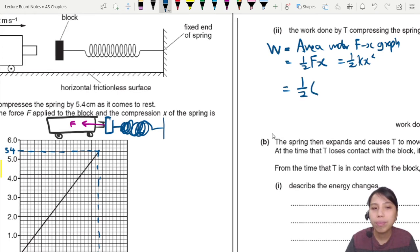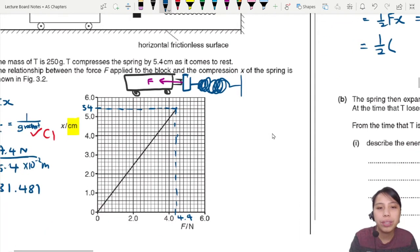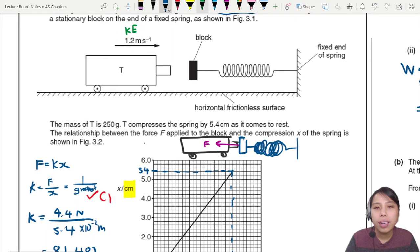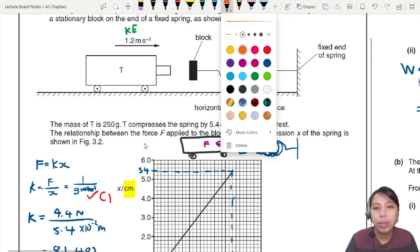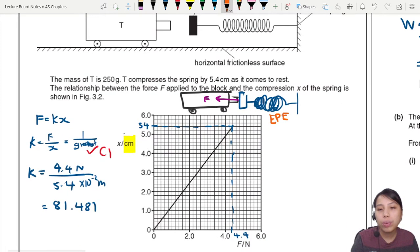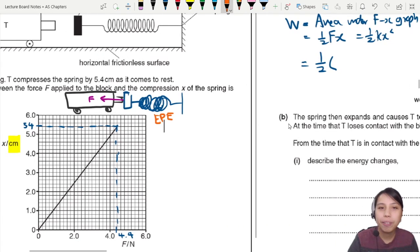The easiest is to take half times - which force shall we take? When you start off you have KE, eventually all the KE is converted into EPE in the spring. That change in energy is associated with the work done. We could choose the maximum extension when it comes to rest: 4.4 newtons, 5.4 extension.